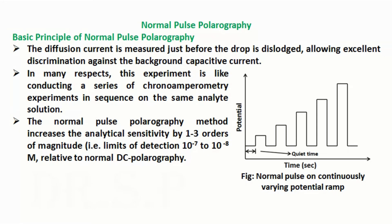The diffusion current is measured just before the drop is dislodged, allowing excellent discrimination against the background capacitive current. In many respects, this experiment is like conducting a series of chronoamperometry experiments in sequence on the same analyte solution. The normal pulse polarography method increases the analytical sensitivity by 1 to 3 orders of magnitude, meaning limits of detection are 10 to the power minus 7 to 10 to the power minus 8 molar, relative to normal DC polarography.